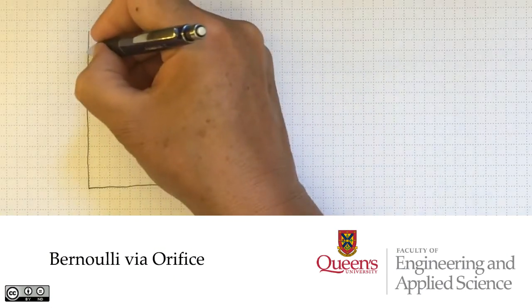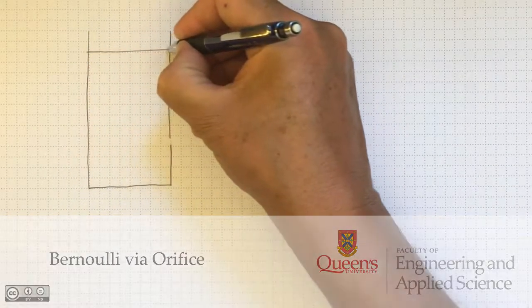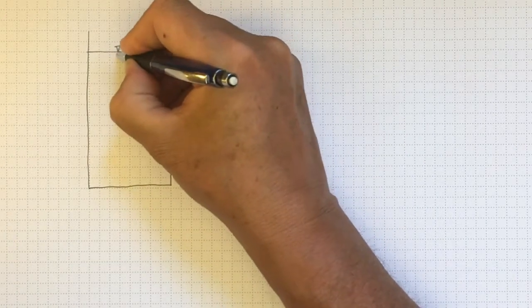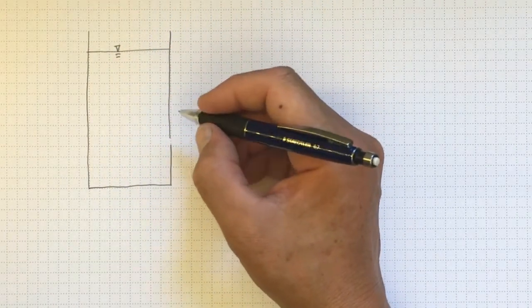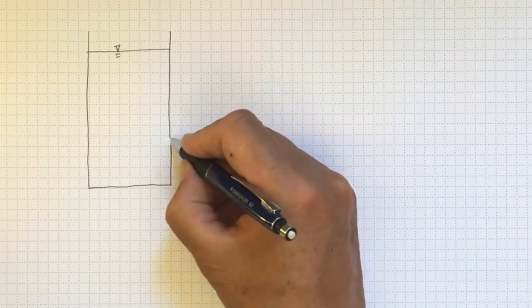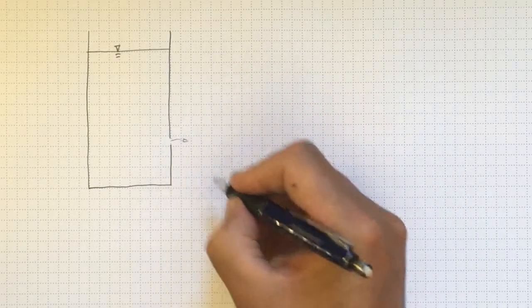This time, let's look at a tank. It's a rectangular tank, and it has a hole in it. It's full of water. We use this little symbol to show that free surface. And water is going to come pouring out through the side of the tank.